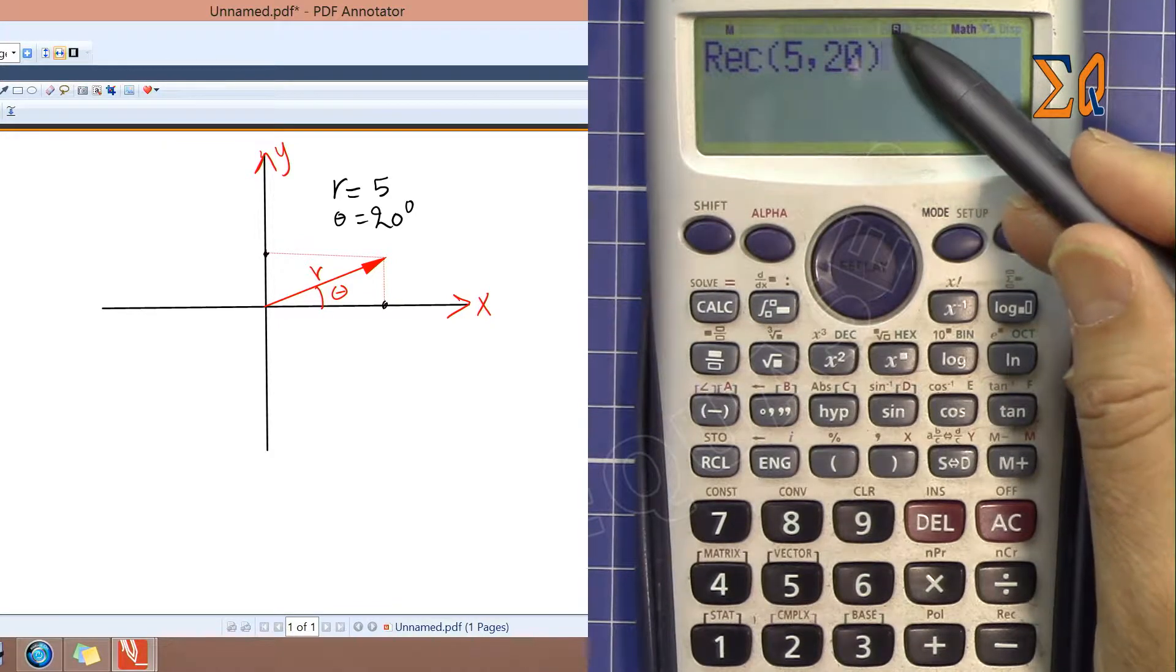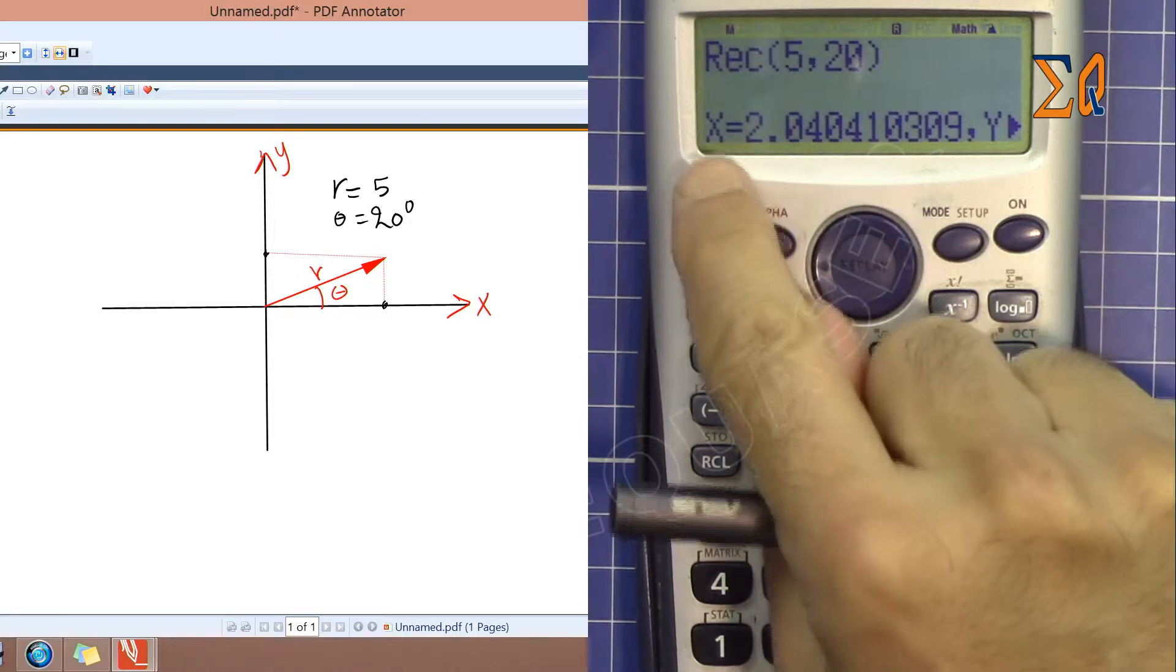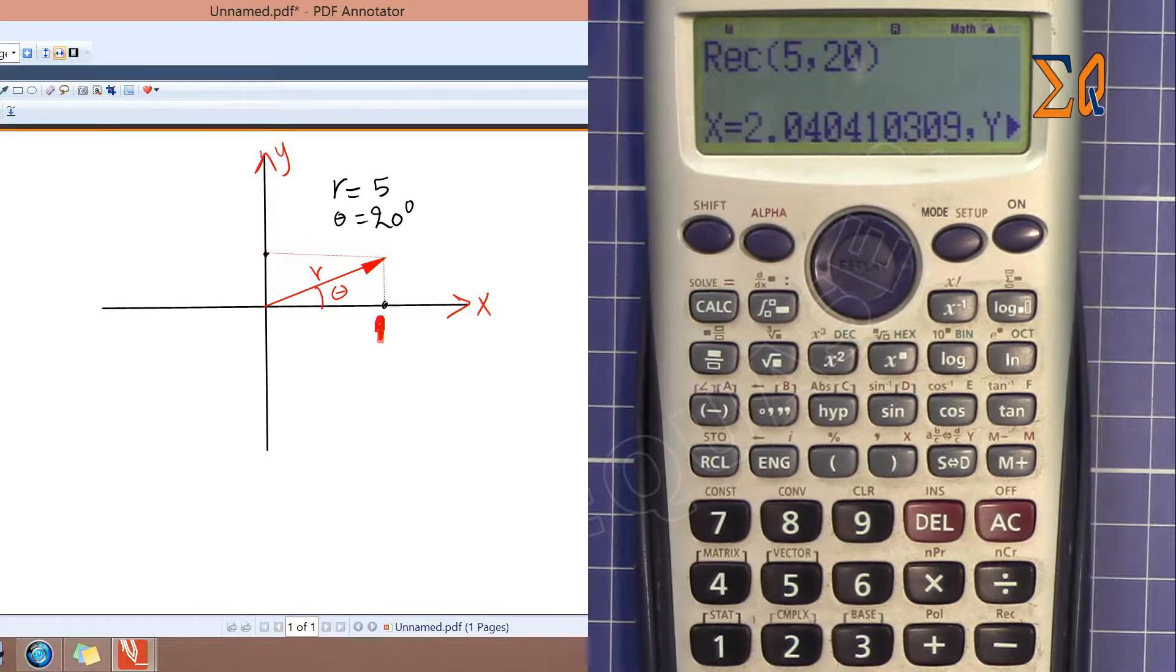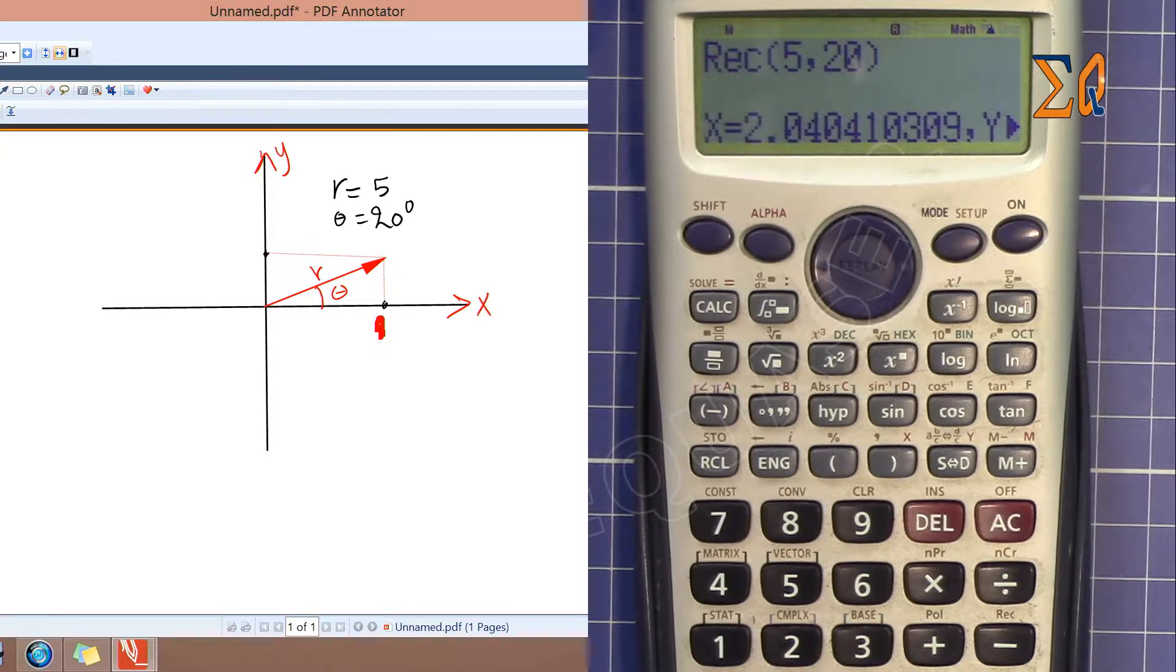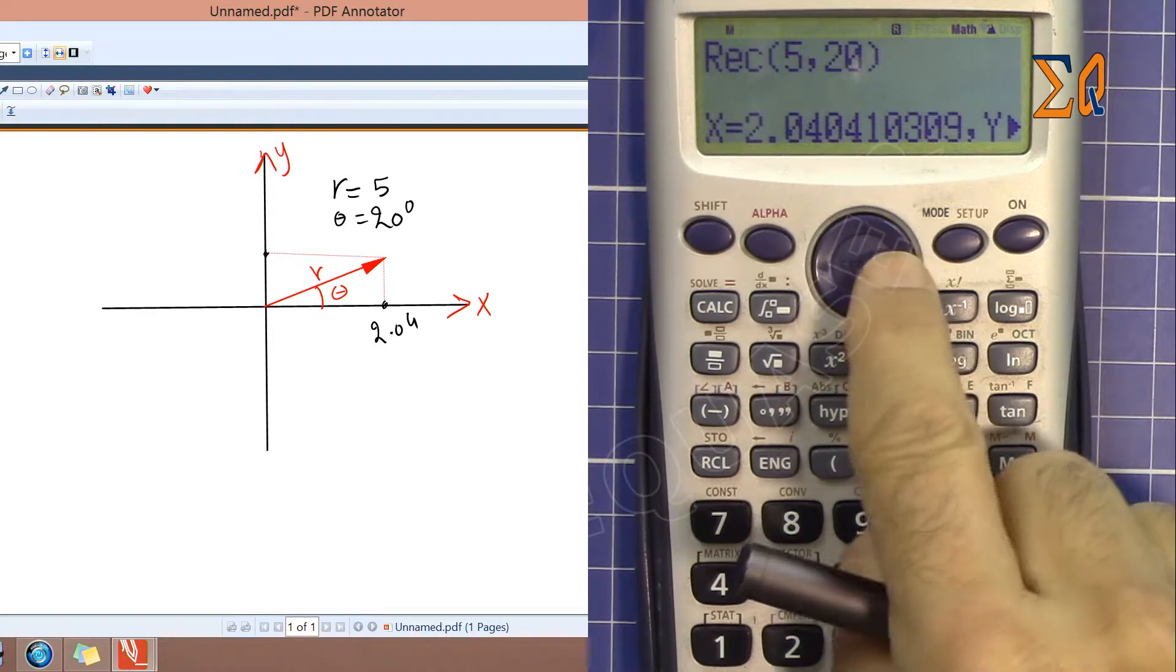so I will get the wrong answer, but I'm just doing it on purpose. Okay, so we're getting X which is 2.04 and then here it says Y. Either I can scroll to the right to see Y is 4 point something.